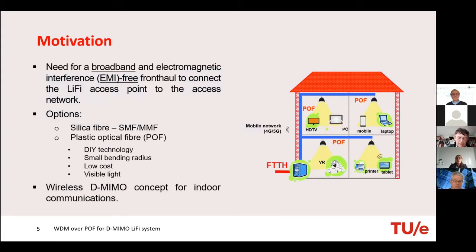Li-Fi can use light to transmit data and also be used for data communication. But we need broadband and EMI-free front-haul to interconnect the Li-Fi access points to the access network. One of the options is to use optical fibers. We have two main options: silica fiber, which can be single-mode or multi-mode, and plastic optical fibers. Here we choose to use PoFs because they are a do-it-yourself technology, have small bending radii, are low cost, and use visible light that is easier to work with.